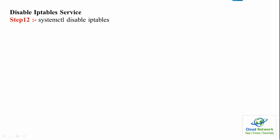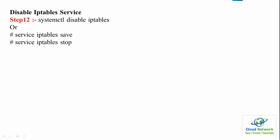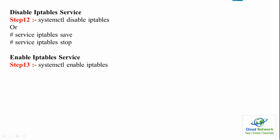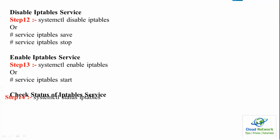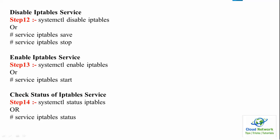To disable the IP tables service, use the disable command. Step 14 is the command to check the status of IP tables: use systemctl status iptables, or alternatively service iptables status.